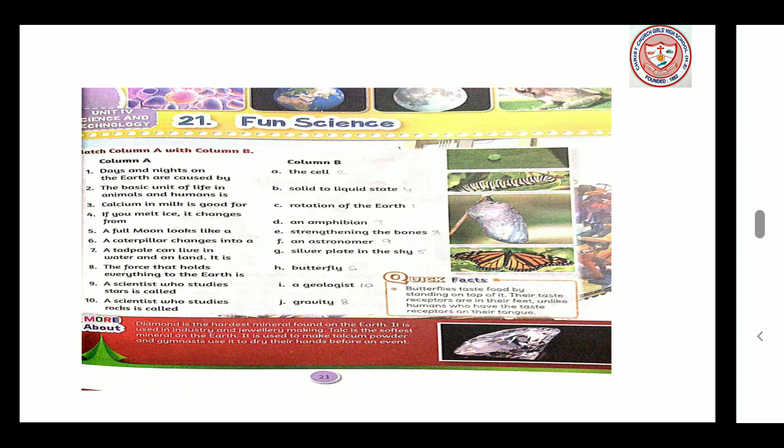Fun Science - Match column A with column B. Number 1: Days and nights on the earth are caused by rotation of the earth. Number 2: The basic unit of life in animals and humans is the cell. Number 3: Calcium in milk is good for strengthening the bones. Number 4: If you melt ice, it changes from solid to liquid state. Number 5: A full moon looks like a silver plate in the sky. Number 6: A caterpillar changes into a butterfly. Number 7: A tadpole can live in water and on land — it is an amphibian. Number 8: The force that holds everything to the earth is gravity.